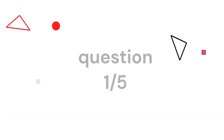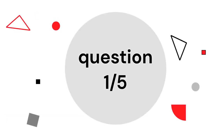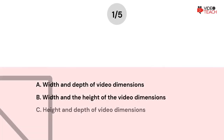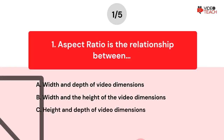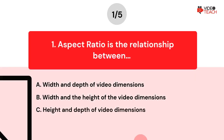Question number one. Aspect ratio is the relationship between... Option A: Width and depth of video dimensions. Option B: Width and the height of the video dimensions. Option C: Height and depth of video dimensions.